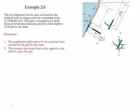Example 2.6. In this example we have a large reservoir which has an inclined wall. The inclination angle of the wall is 60 degrees. The wall also has a gate which has a diameter of 4 meters. The shaft of this gate is located at 10 meters below the surface of the water. We need to find the magnitude and the location of the resultant force exerted on the gate by the water, and also what moment we need to apply in order to open the gate.